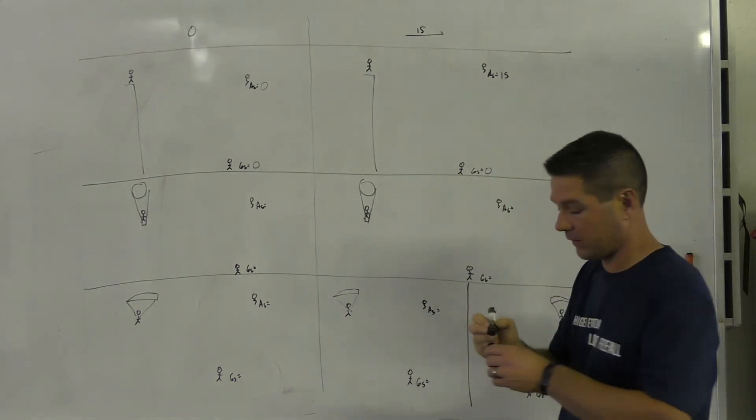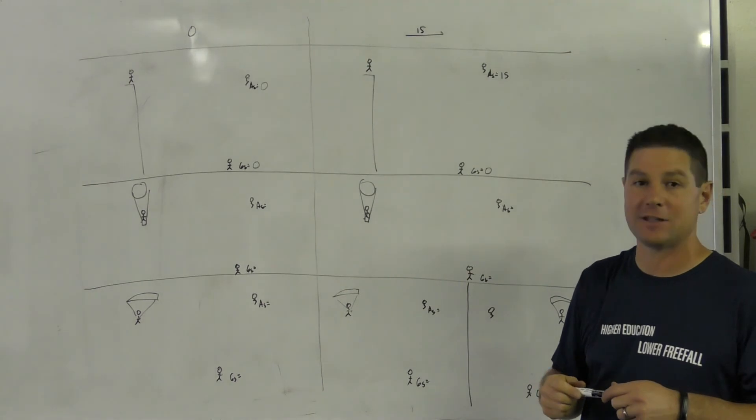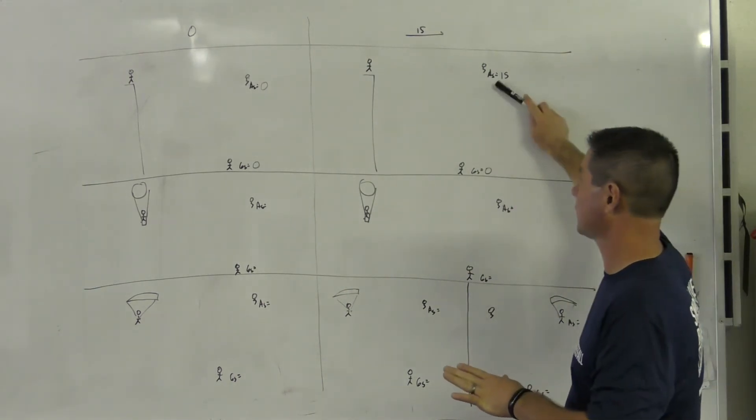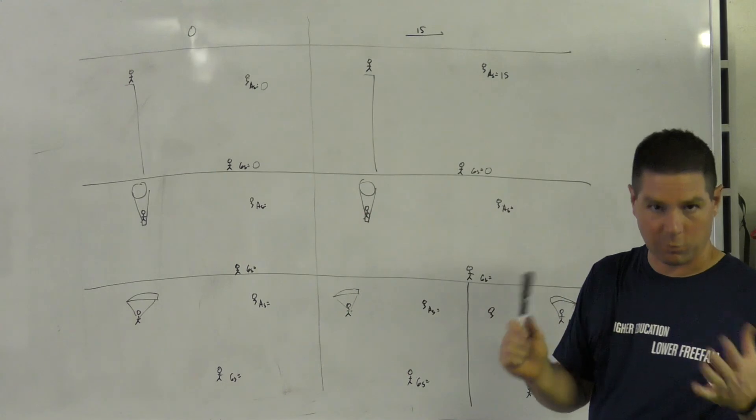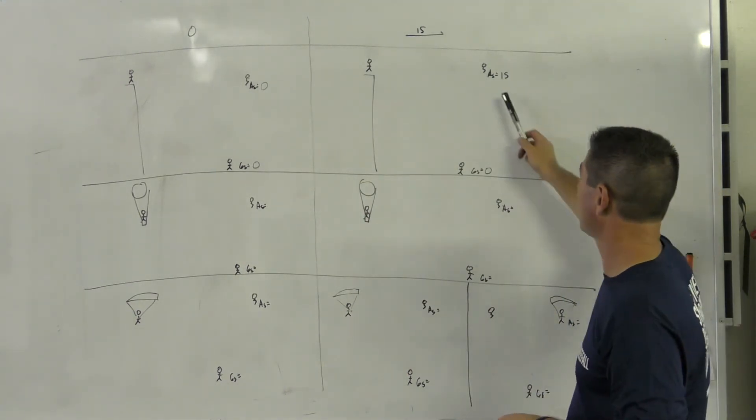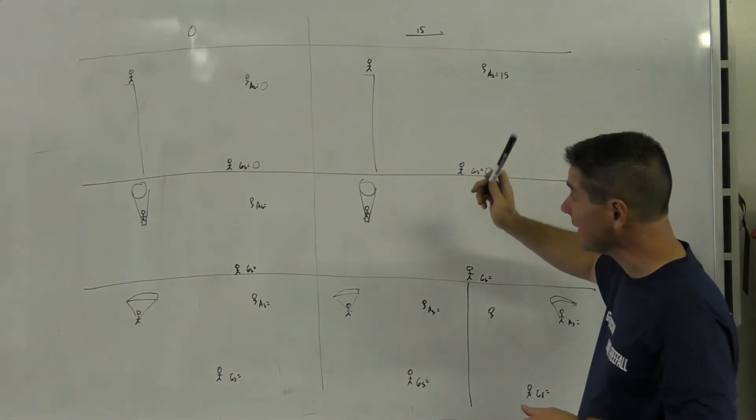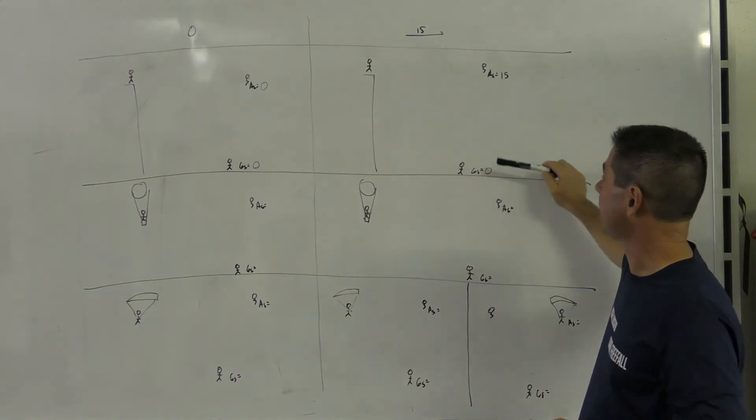Somebody in the back row there is waving their hand around saying no, no, it's negative 15 miles per hour. I'm not going to worry about that right now. We're just going to say it's 15 because that's how fast you and the balloon are moving apart. I'm not going to worry about the direction of this airspeed. Airspeed's 15, ground speed's zero.